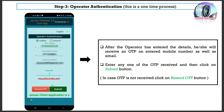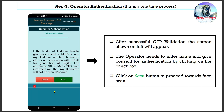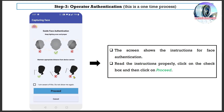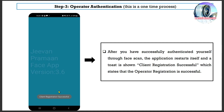If OTP is not received, click on Resend OTP. After successful OTP validation, the screen shown on the left appears. The operator needs to enter their name and give consent for authentication by clicking the checkbox. Click on the Scan button to proceed towards face scan. A pop-up appears asking if you want to proceed with face scan — click Yes. The screen shows instructions for face authentication; read them, check the checkbox, and click Proceed. You can use the front or rear camera. Follow the on-screen instructions — hold still and blink your eyes — to complete face authentication. After successful face scan, the application restarts and shows a toast: 'Client registration successful,' confirming operator registration is complete.